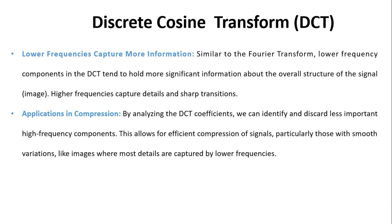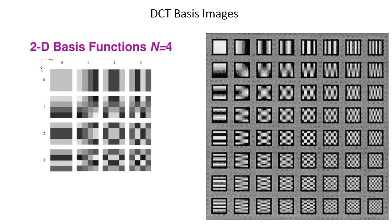This is the DCT basis image for N=4 and N=8. When N=4, 16 basis images are generated; for N=8, N² = 64 images are generated. Observing the pattern for N=4: in the corner we get the pure low-frequency component — the smooth area capturing low-frequency information from the signal. Moving toward the right-hand bottom, we get combinations of low and high frequencies, and finally purely high-frequency components.